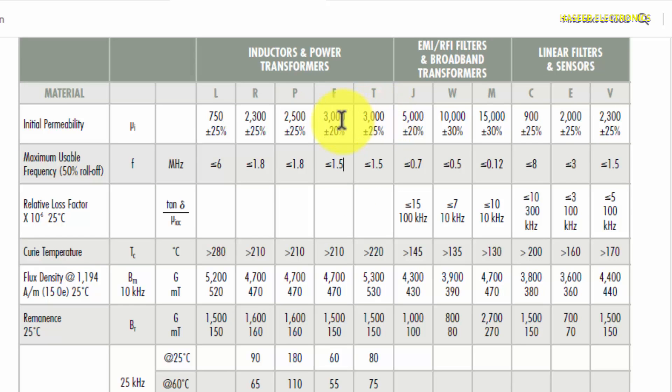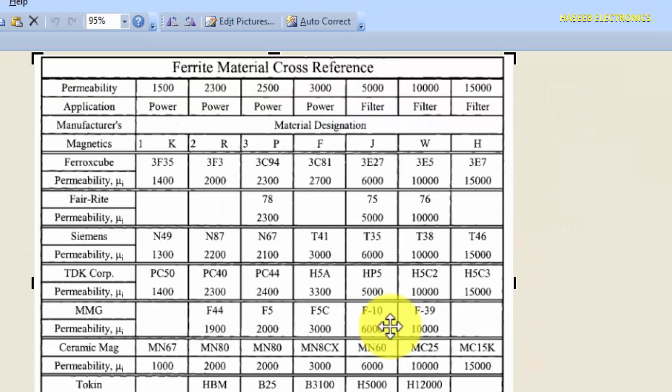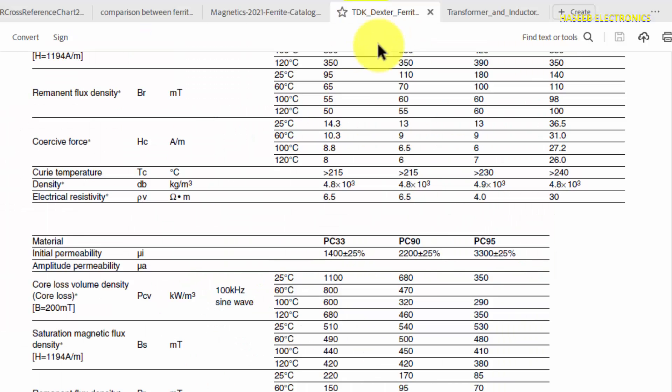Under 3000 F material, the equivalent number from TDK, that is H5A. It has permeability 3300 from TDK. Yes, H5A. This material has initial permeability 3300.